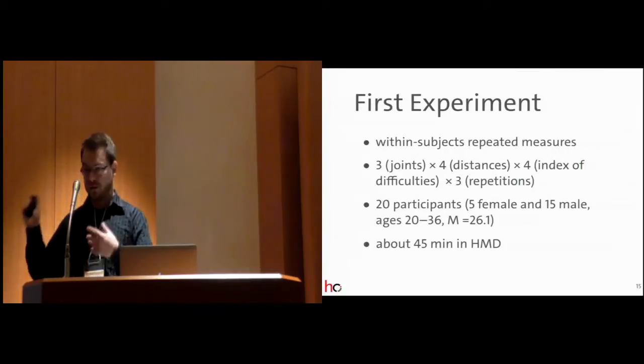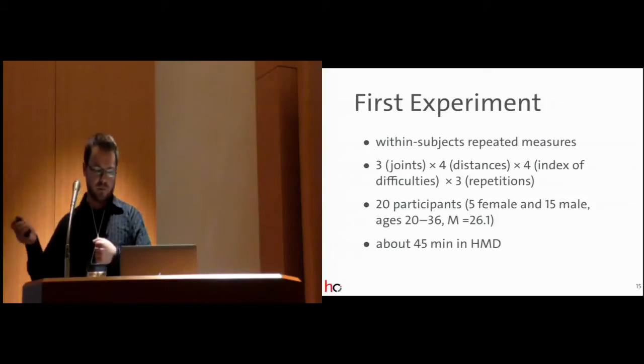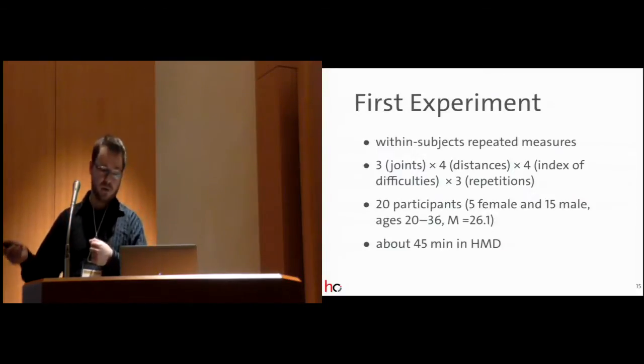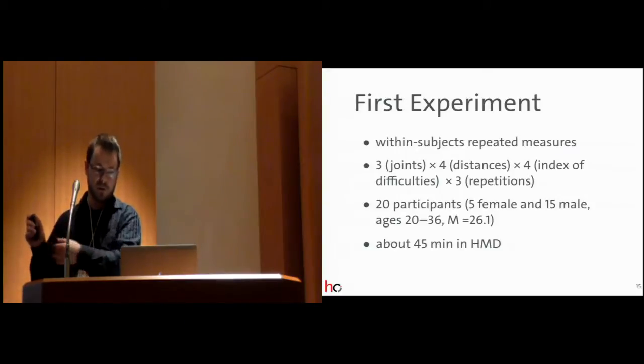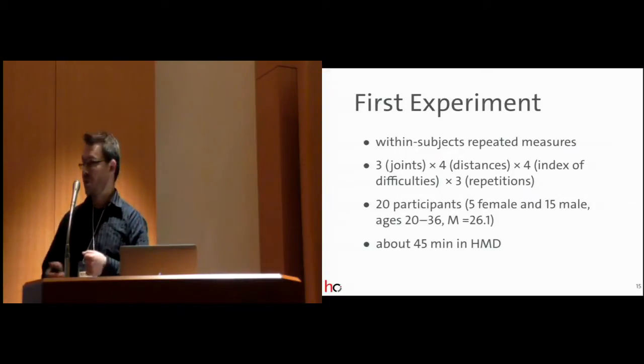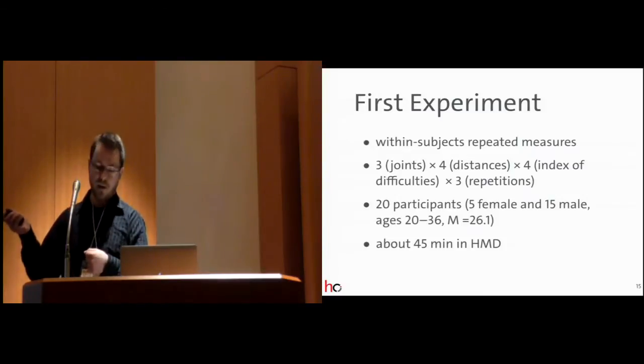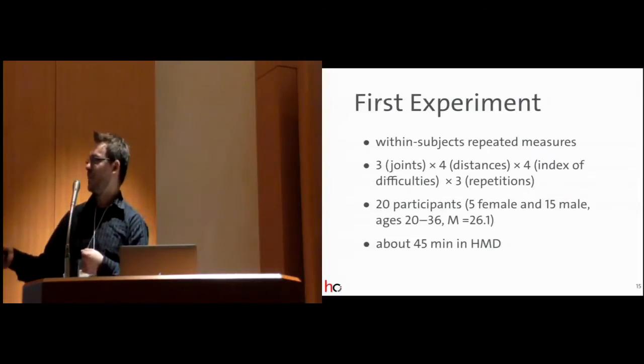So, we conducted two experiments. The first experiment was the one with distances I just described. It was within subjects, repeated measures. Then we investigated three joints, so the shoulder, the elbow, and the wrist joint. The four distances I just mentioned, we also took four indices of difficulty. And the three repetitions.